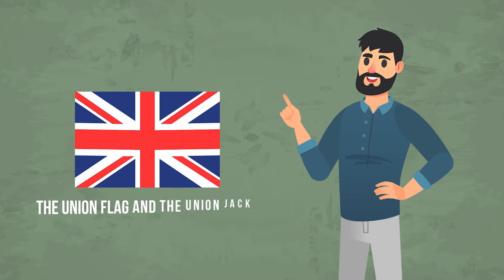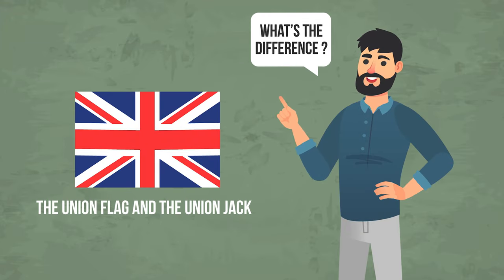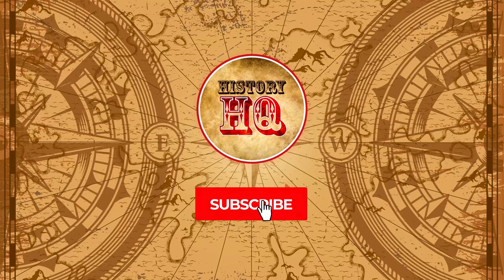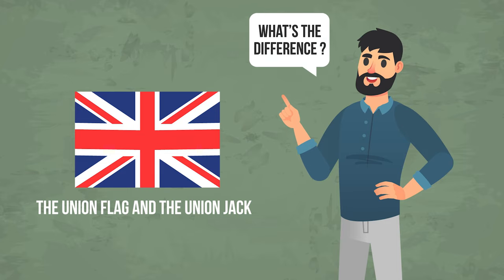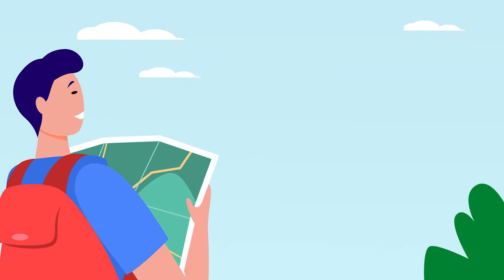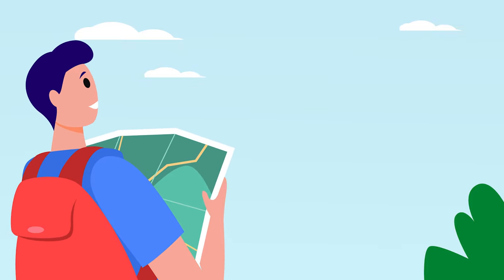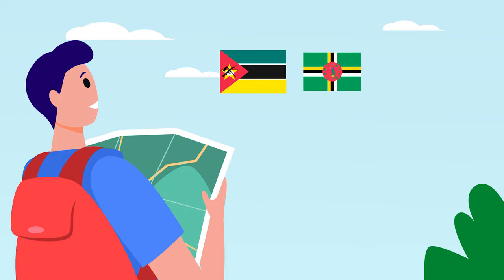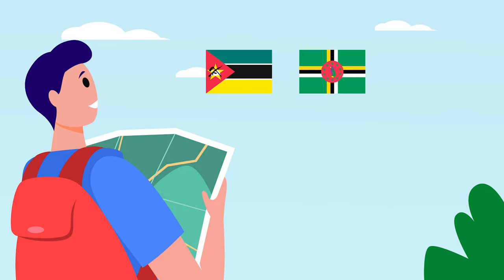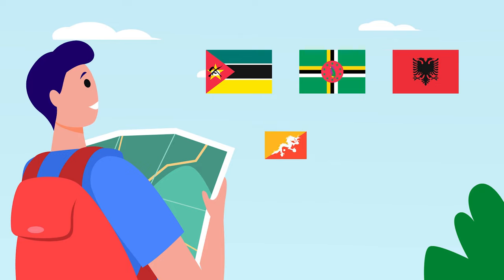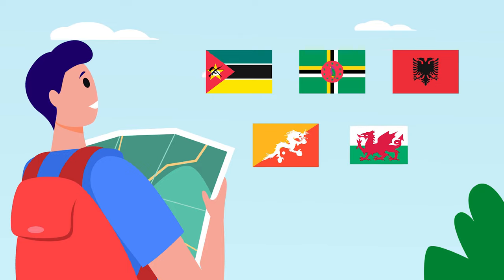The history of the Union Flag and the Union Jack — what's the difference anyway? While the flags of some countries are quite dull and boring, flags of countries such as Mozambique which features an AK-47, Dominica which features a purple parrot, Albania with its double-headed eagle, or Bhutan and Wales with their dragons are far more exciting.